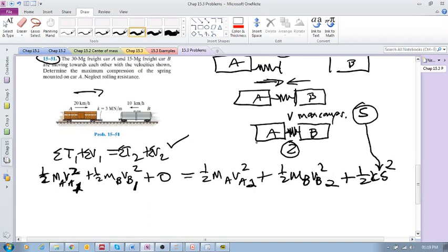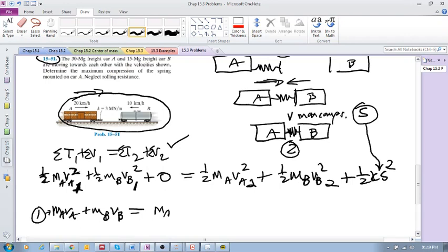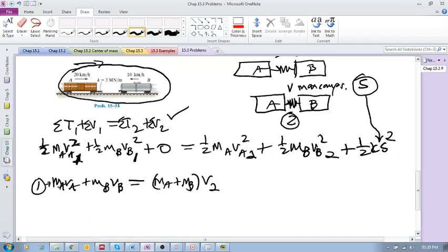What we do is consider this as our system. When the two freight cars begin to interact, the forces between them are internal, so we have no external impulses, which means momentum is conserved. So we have m_A v_A plus m_B v_B at state one. At state two we have maximum compression and the same velocity for both freight cars, so we have (m_A + m_B) times v₂.